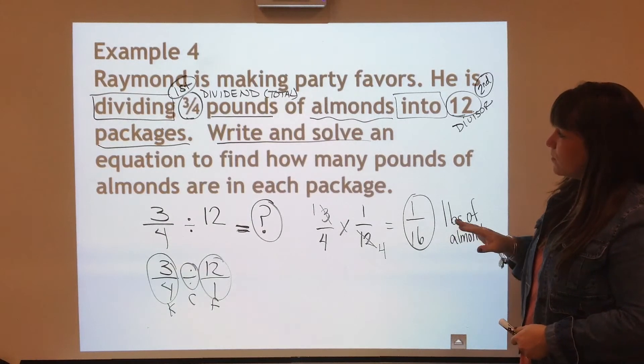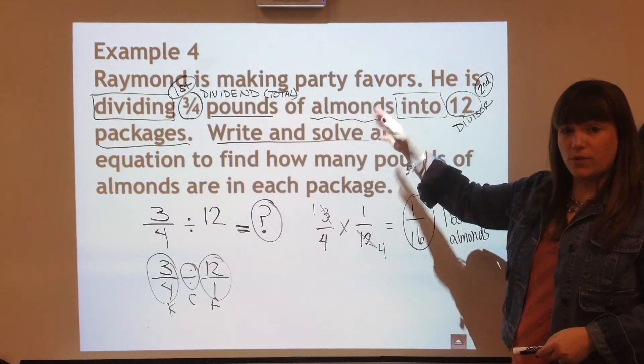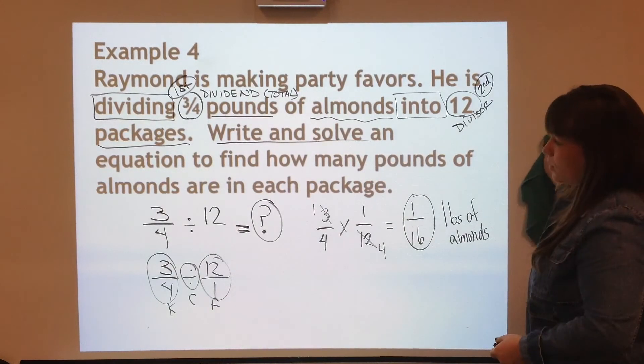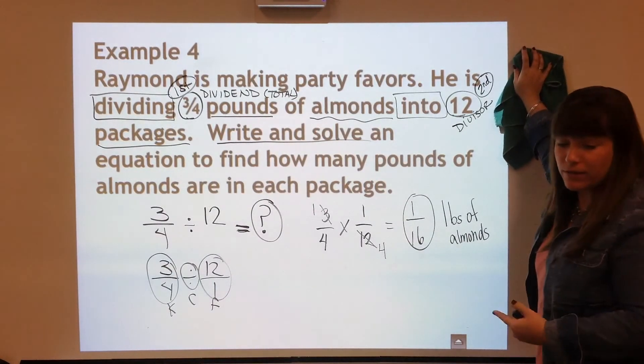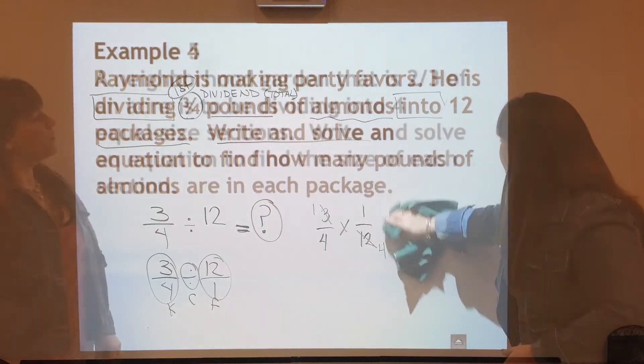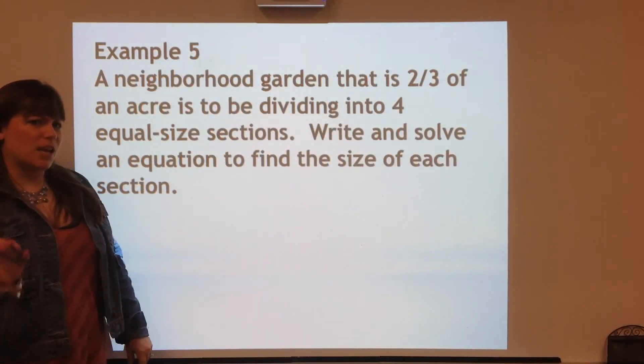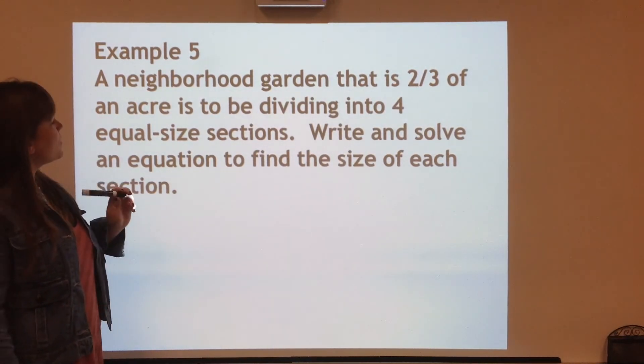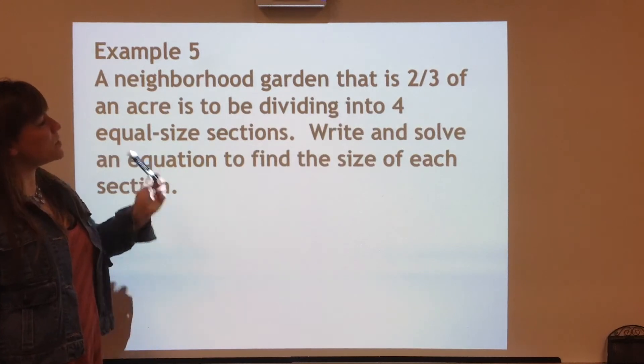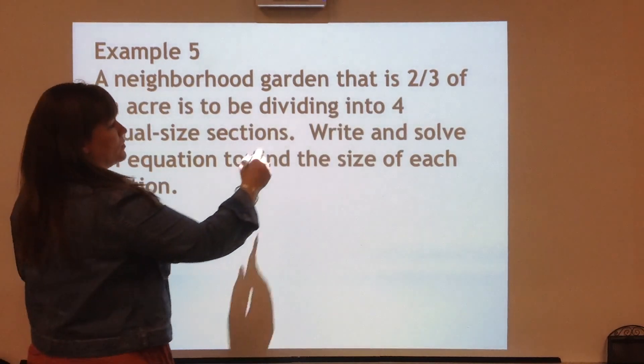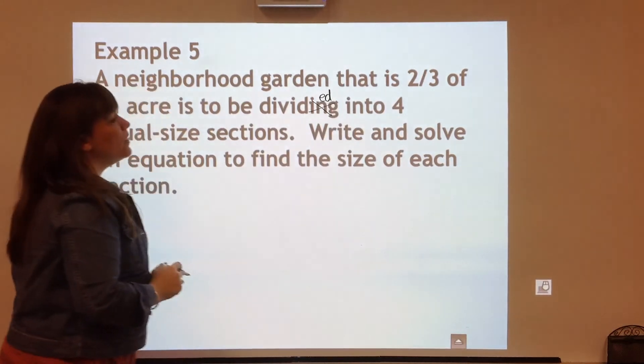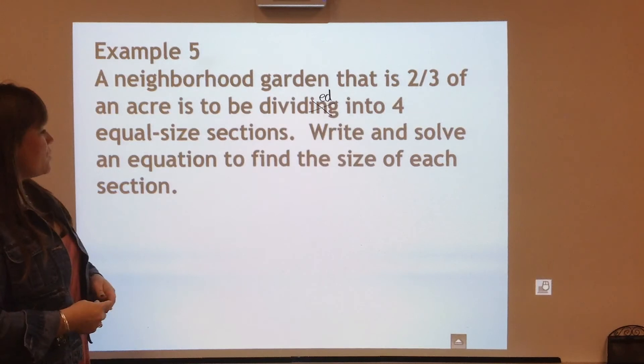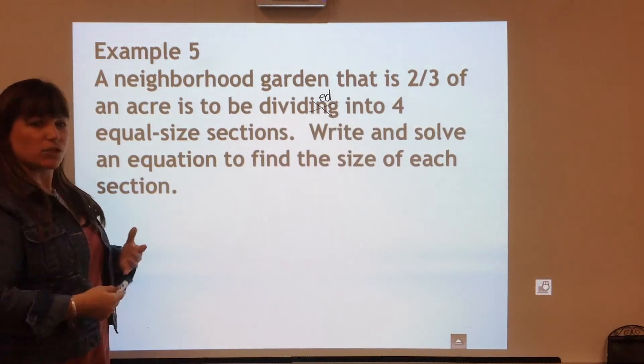Now we have one left. Make sure you're writing and marking up your word problem and then doing the work below. So example five has a tiny little typo. See if you can find it. A neighborhood garden that is 2/3 of an acre is to be divided into four equal sized sections.